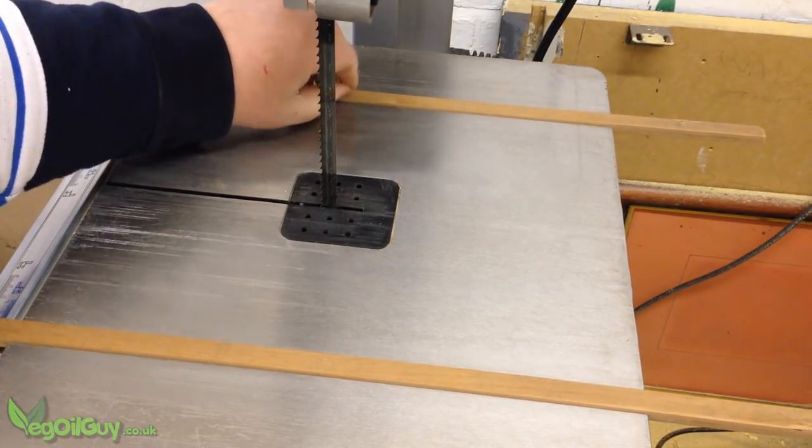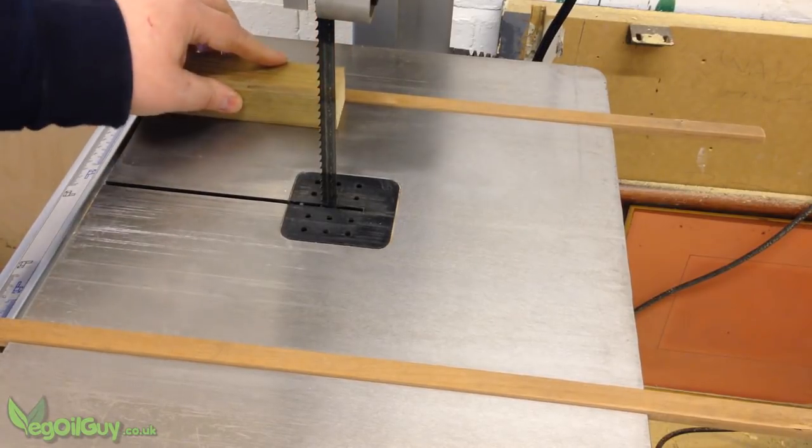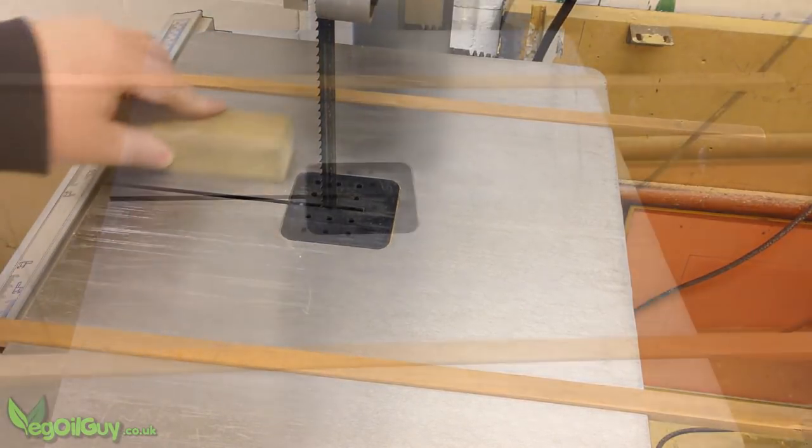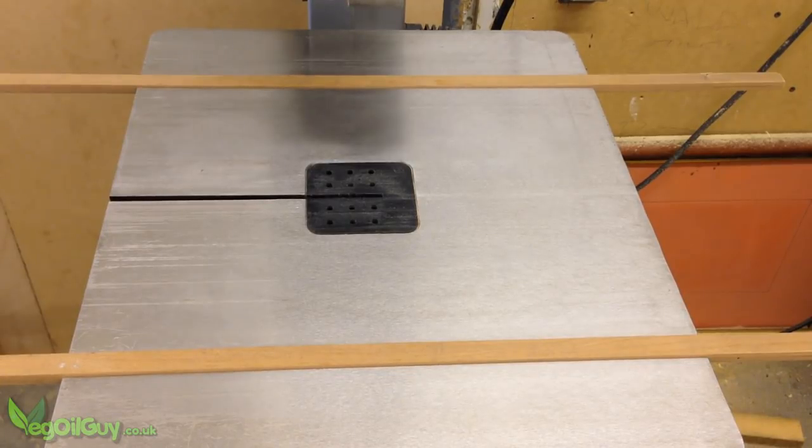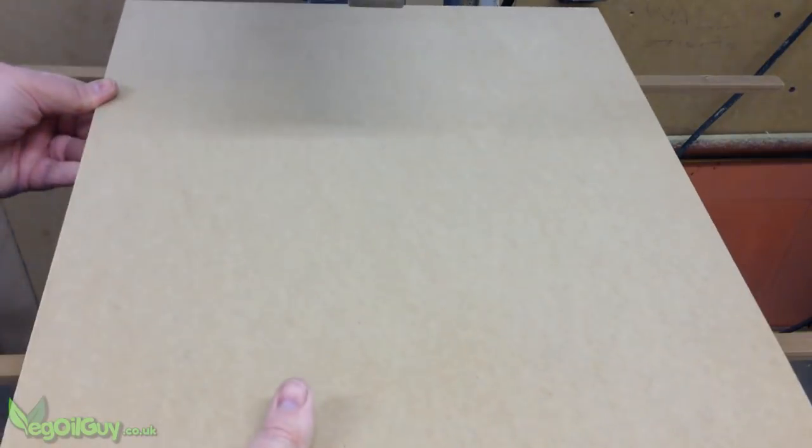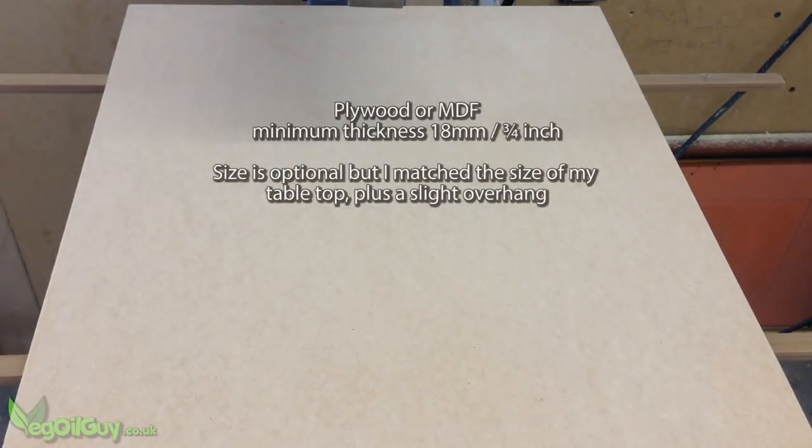You'll also note that these sit proud of the table at the moment and that's deliberate. Here I've removed the blade from the bandsaw. You'll need a piece of plywood or MDF. This should be a minimum thickness of 18mm and I cut mine to roughly the same size as the table.